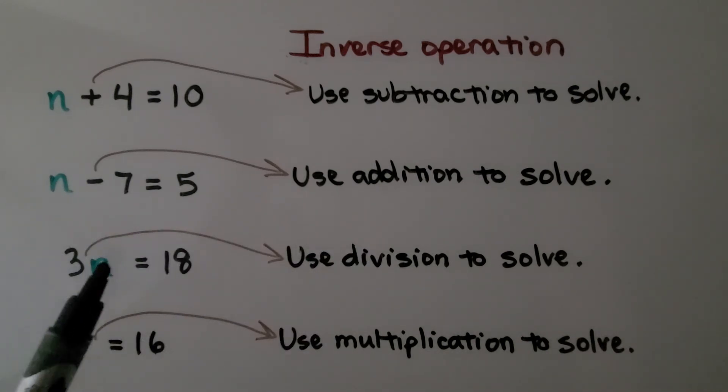When the coefficient is next to the variable that means multiplication, we use division to solve. And when we see the fraction bar that means division, we use multiplication to solve.